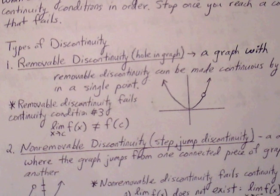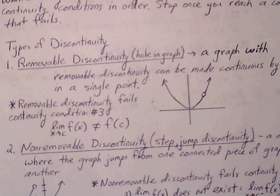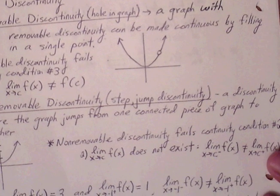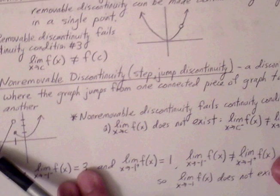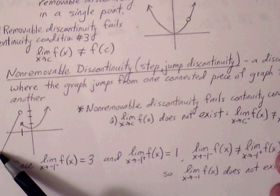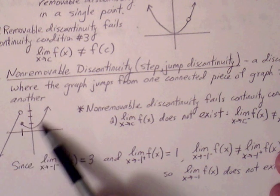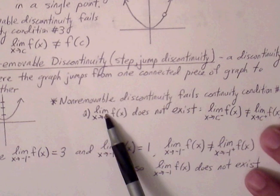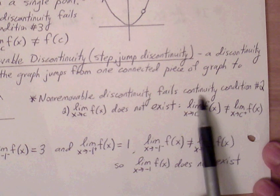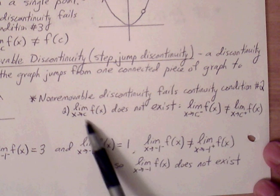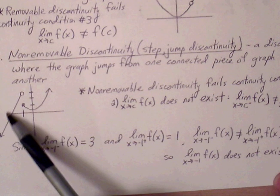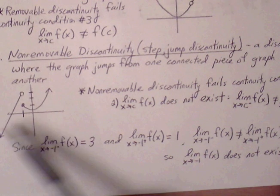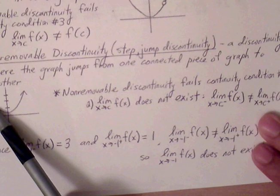The second type is non-removable discontinuity, also called step or jump discontinuity. This is where the graph jumps from one connected piece to another. The left branch and right branch do not connect — they do not agree at the same y value. Non-removable discontinuity fails the second condition: the limit does not exist.